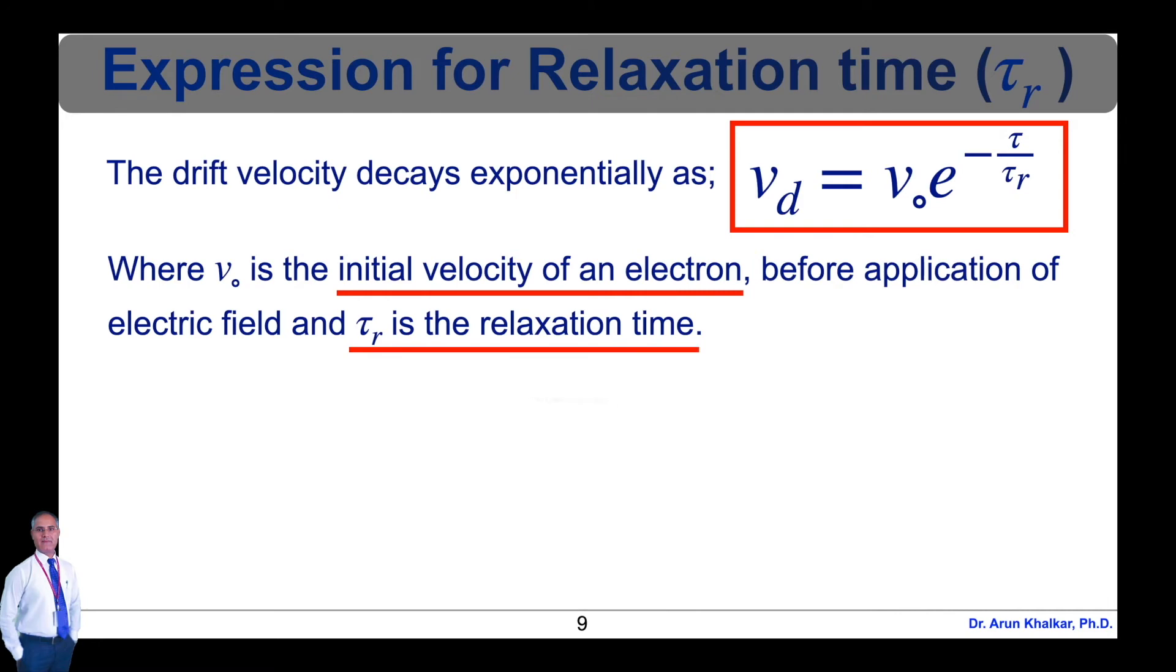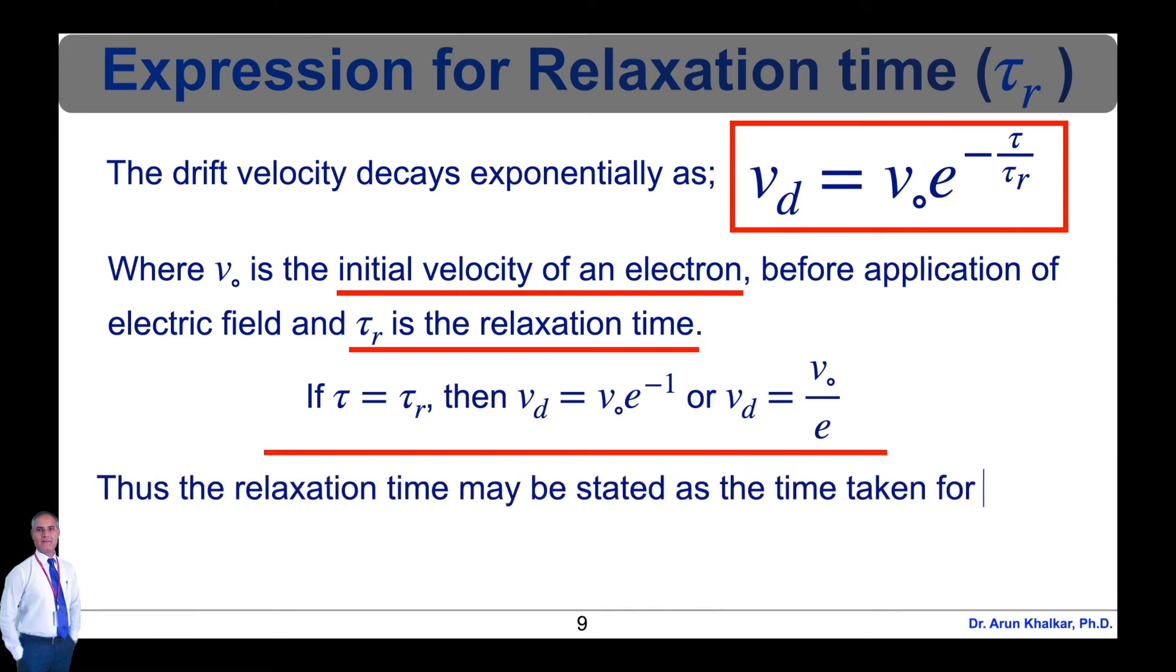If tau equals tau R, then Vd equals V0 exponential of minus 1, or Vd equals V0 upon E. Thus the relaxation time may be stated as the time taken for the drift velocity to decay to 1 upon E of its original initial value.